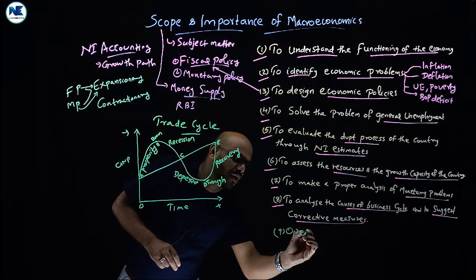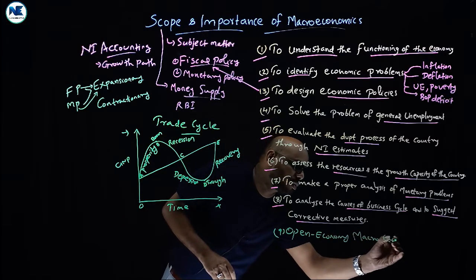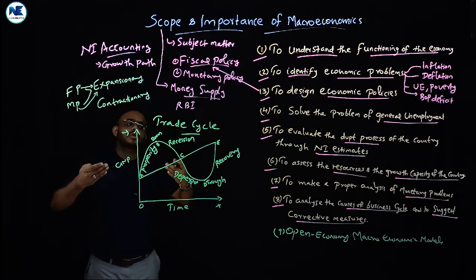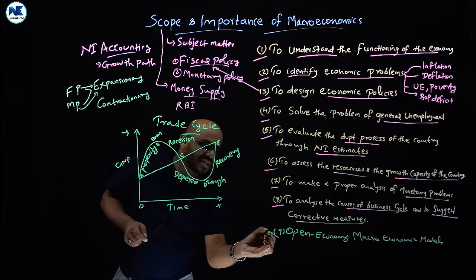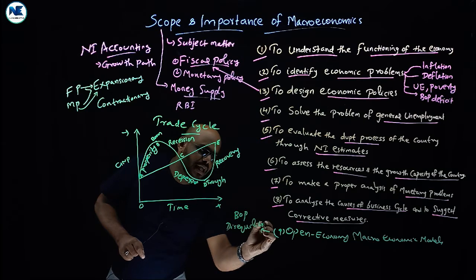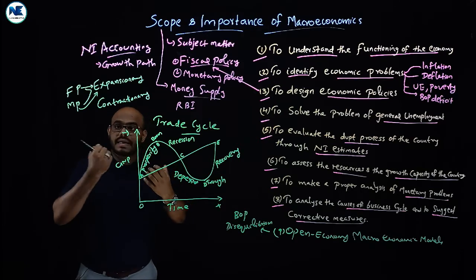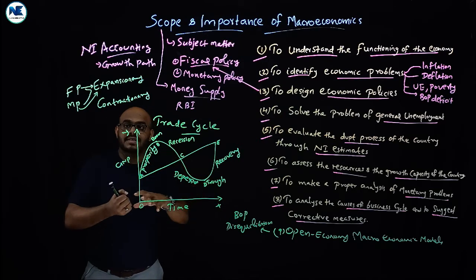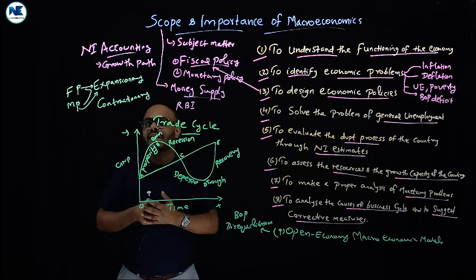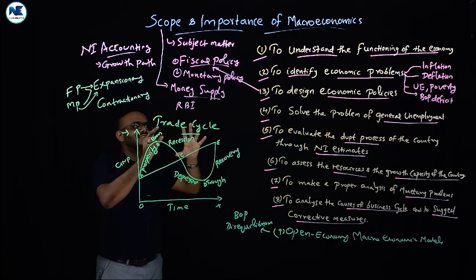An additional point is the open economy macroeconomic model, related to the external sector of macroeconomics. This covers measures to address BOP disequilibrium, including exports, imports, credit and debit in the balance of payments, exchange rates, and foreign exchange reserves. These are major areas in the scope of macroeconomics dealing with the external sector.